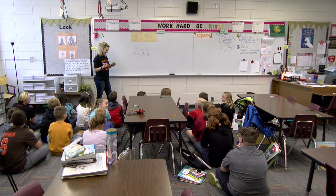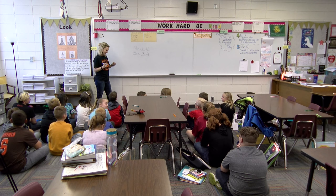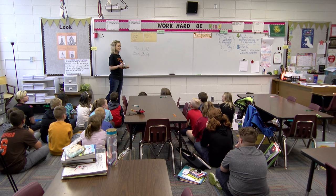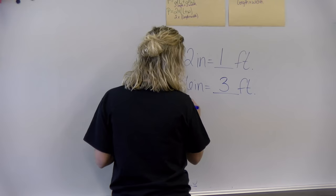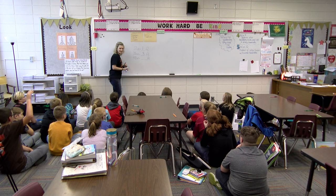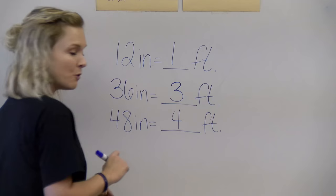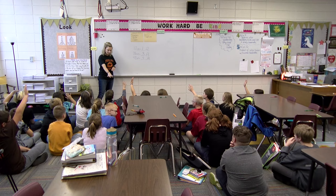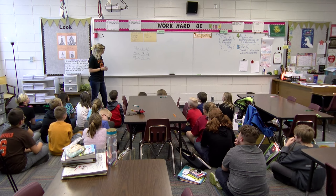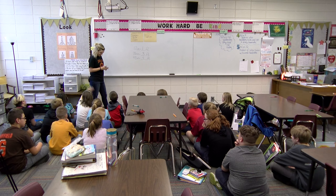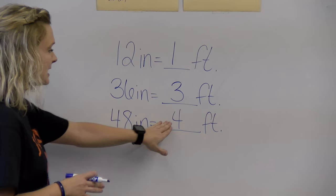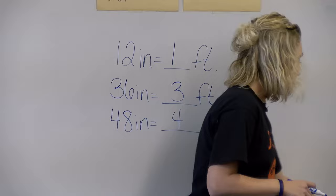How did you know? Because I did three times twelve, and I got 36. I like how he explained that. I'm going to change it again, and I'm going to give you 48 inches. The equivalent measurement of feet would be what? London. Four. Can someone tell me how did she know that was four? Because four times twelve is forty-eight. Exactly.